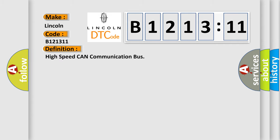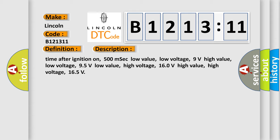The basic definition is high speed CAN communication bus. And now this is a short description of this DTC code.